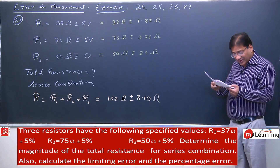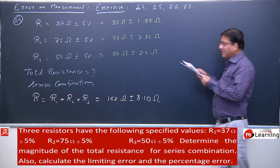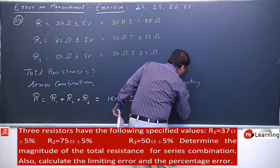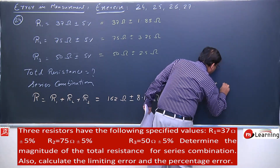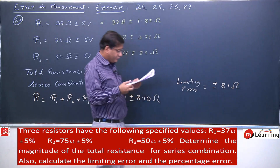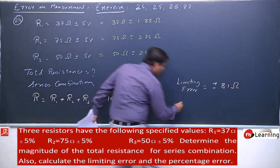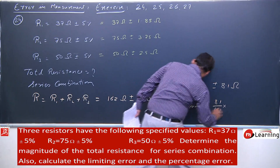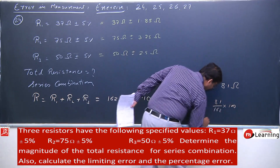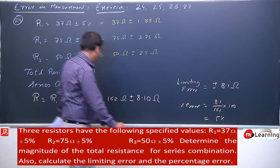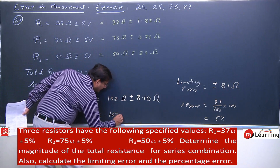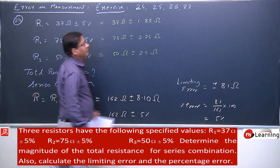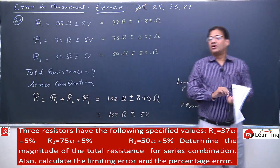The limiting error is plus or minus 8.1 ohm. The percentage error is 8.1 upon 162 into 100, which is 5 percent. So we can also write total resistance as 162 ohm plus or minus 5 percent.